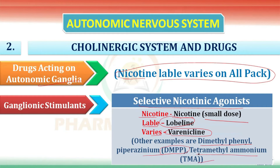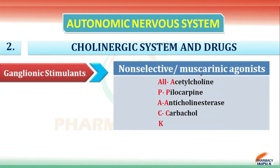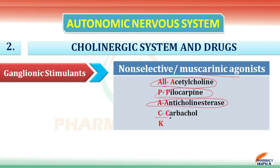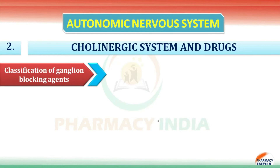The next class is non-selective muscarinic agonists, using the 'ALL PACK' mnemonic: A for acetylcholine, L for — all indicates acetylcholine, P for pilocarpine, A for anticholinesterase, C for carbachol. So 'all pack' covers the non-selective agonists.